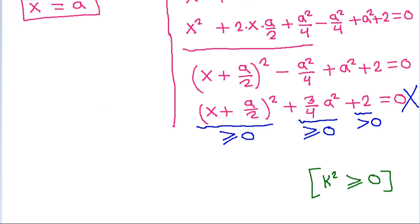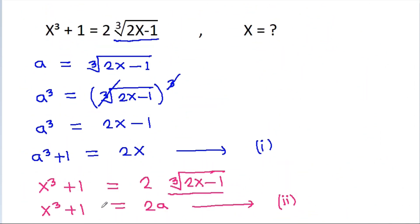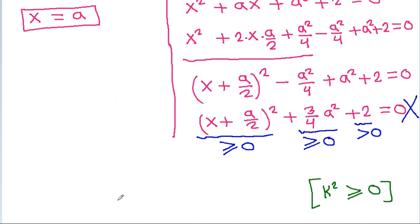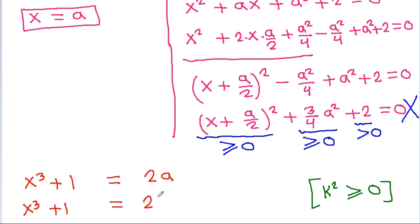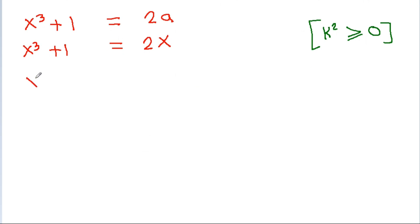Since x equals a, we substitute into equation 2: x cubed plus 1 is equal to 2a, which becomes x cubed plus 1 equals 2x. So x cubed minus 2x plus 1 equals 0. At x equals 1: 1 minus 2 plus 1 equals 0, which confirms that x equals 1 is a root.